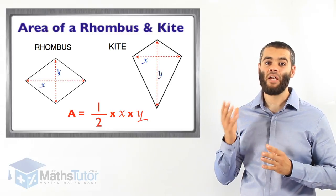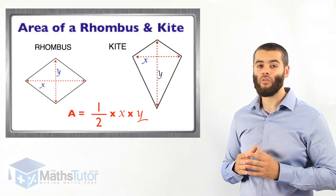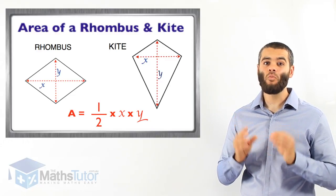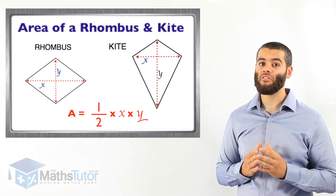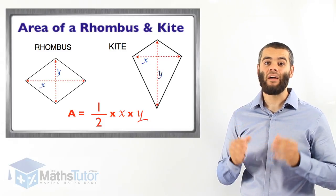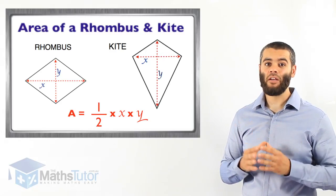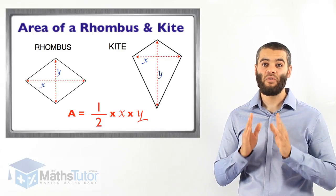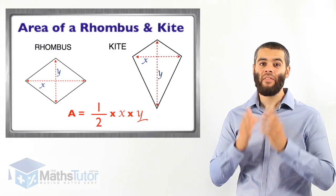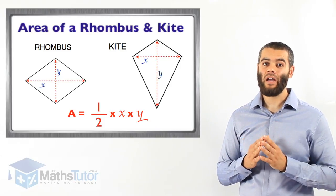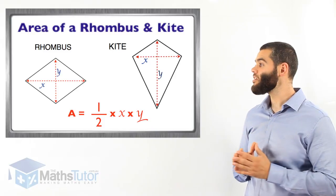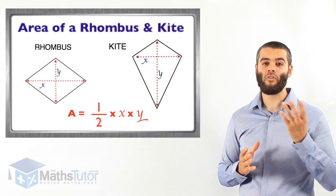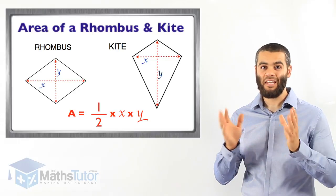Whenever you think of a kite and a rhombus, remember that formula: the area is half times x times y. Now, the x and y are not any of the sides of a rhombus or a kite — the x and y are actually the diagonals. The diagonals of a rhombus and the diagonals of a kite are x and y. Very important to remember. I'm going to show you some examples of how we work out the area of a rhombus and the area of a kite.